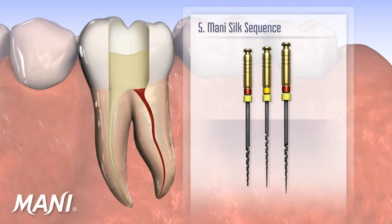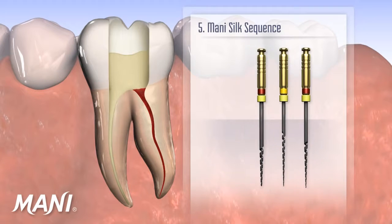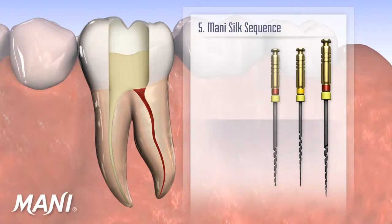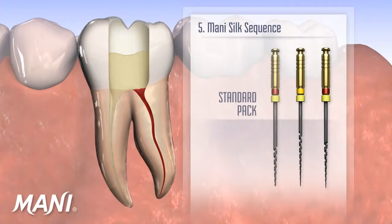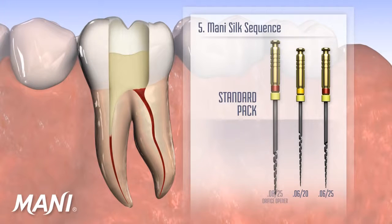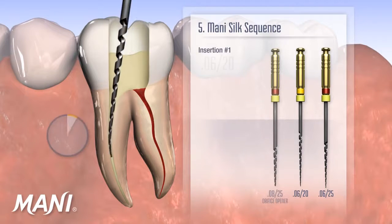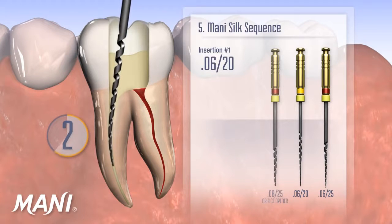Mani SILK files are used from the left side of the pack to the right, using a continuous, gentle, and controlled three-second insertion. The middle file in the given pack configuration is used first, followed by the file on the right-hand side of the pack. Using the standard pack as an example, this means that after the orifice is shaped and the glide path made, the .06/20 instrument is inserted first, followed by the .06/25.